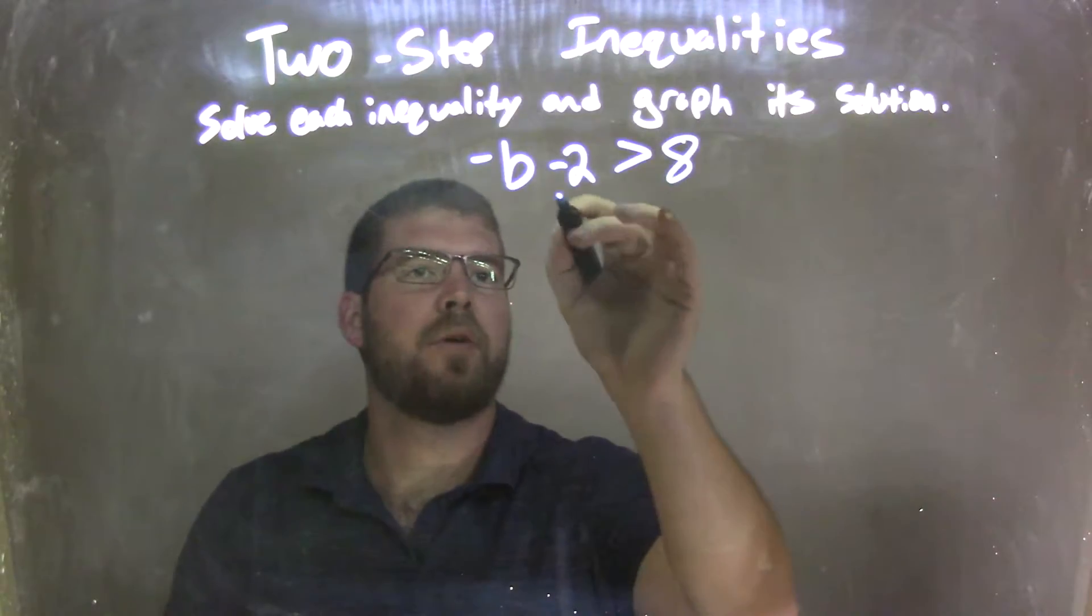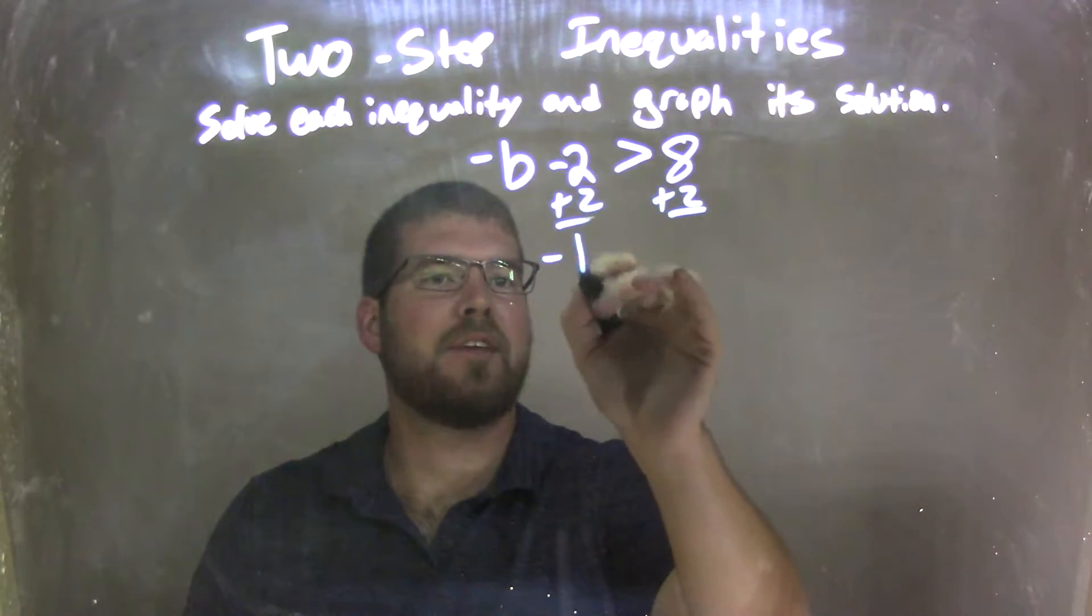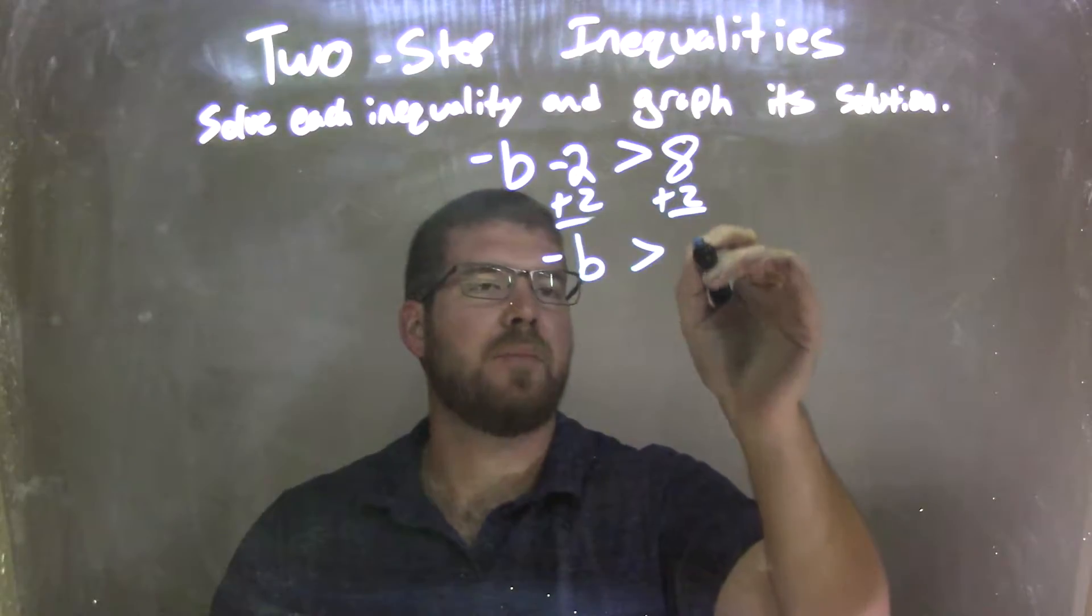Well, first step, add 2 to both sides. By adding 2 to both sides, I'm left with negative b on the left is greater than 8 plus 2, which is 10.